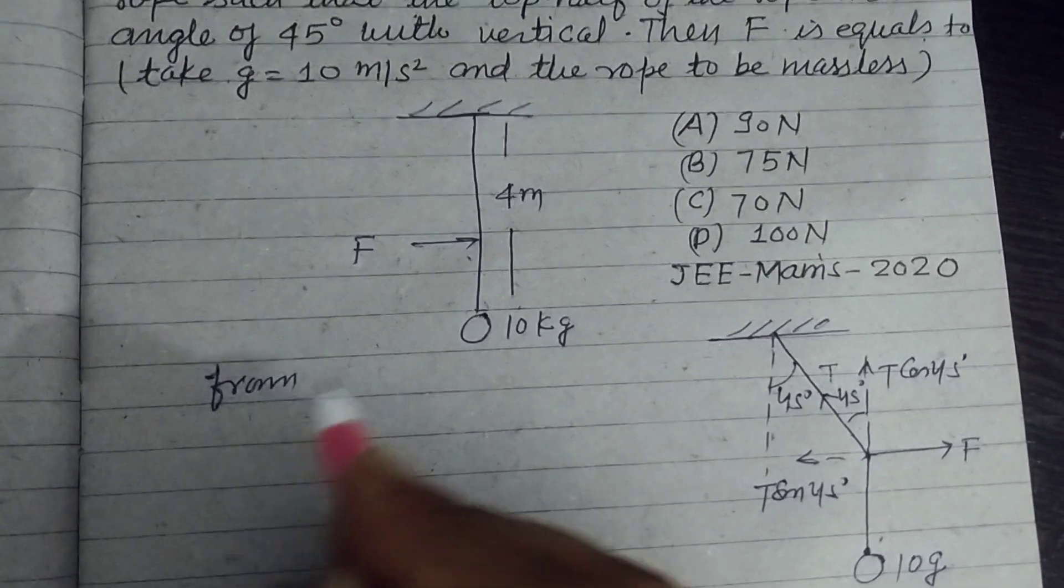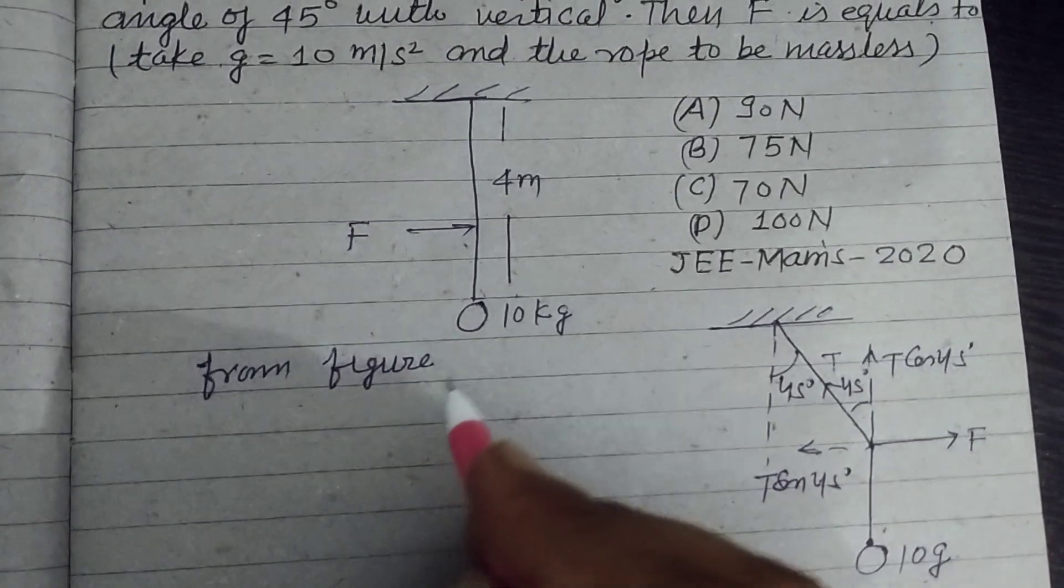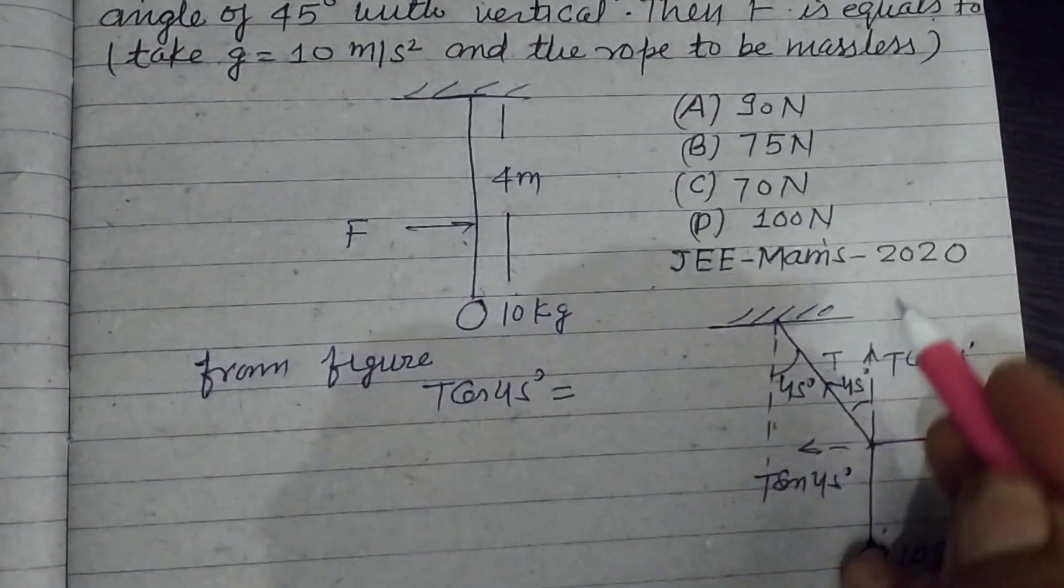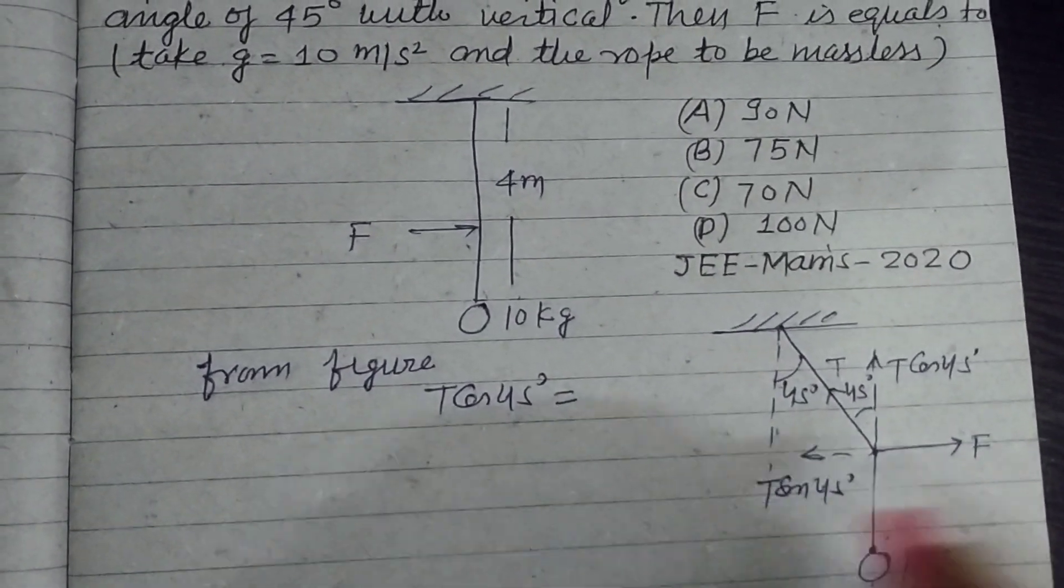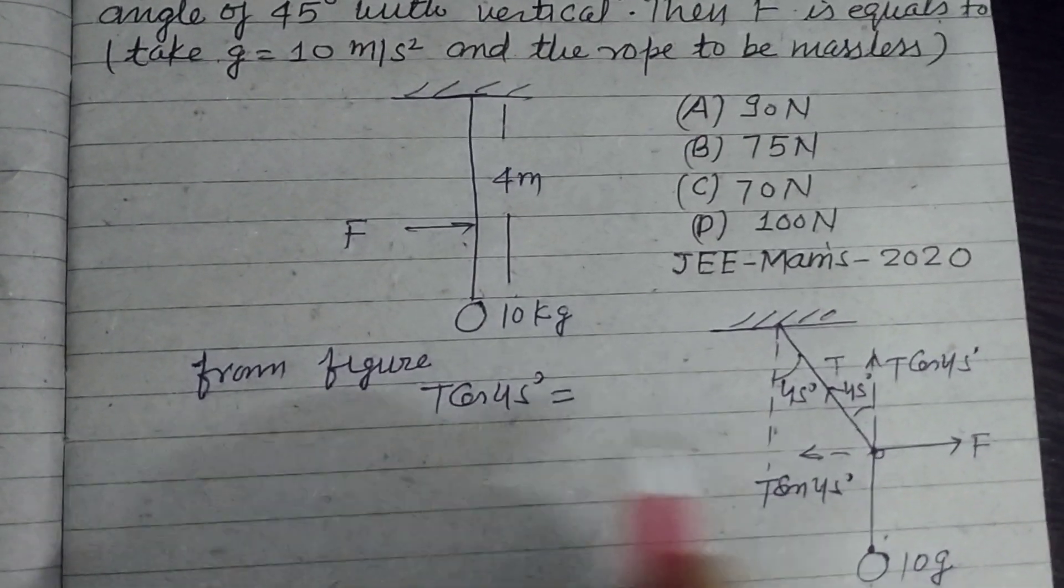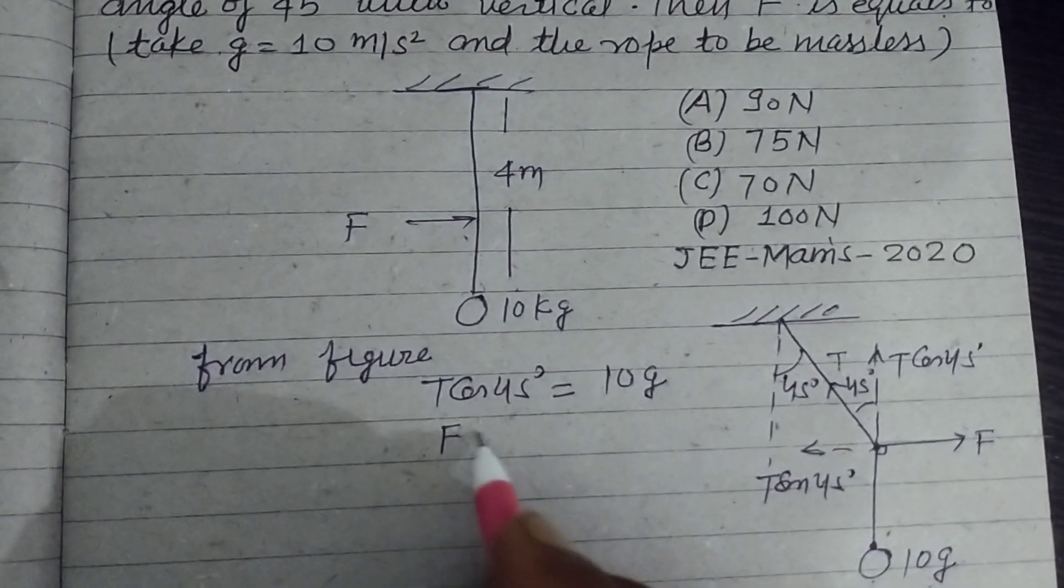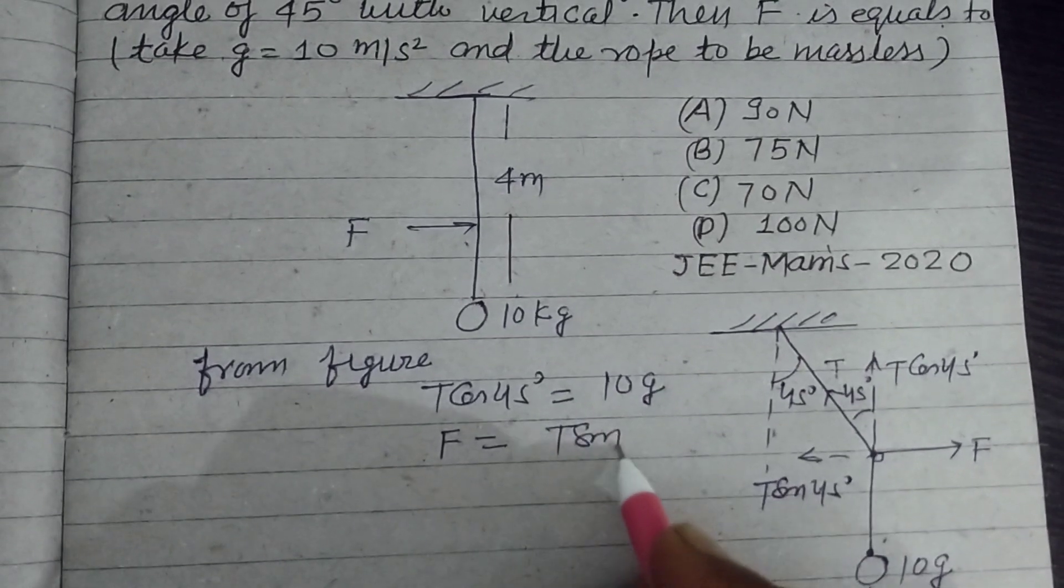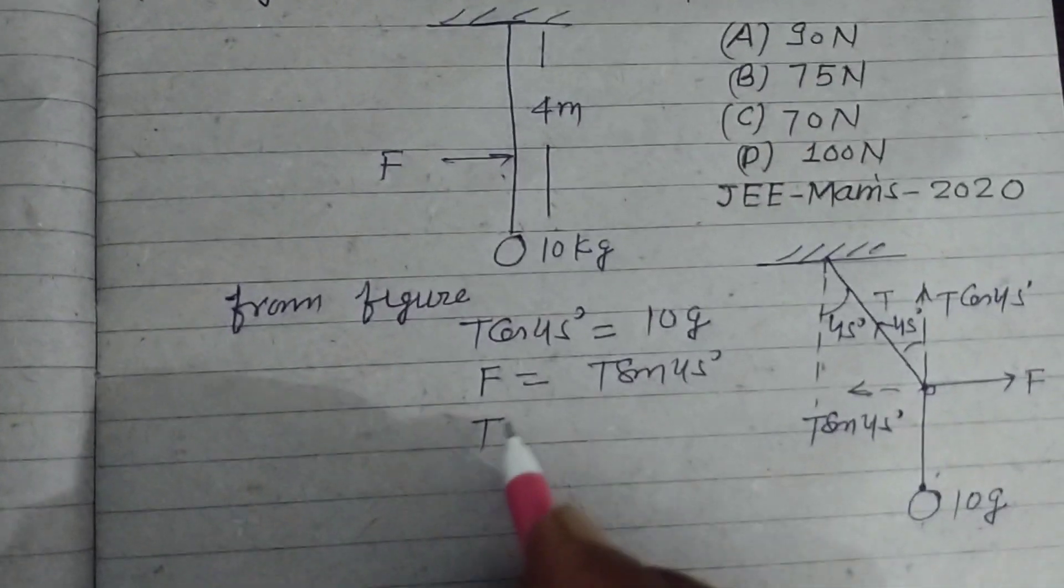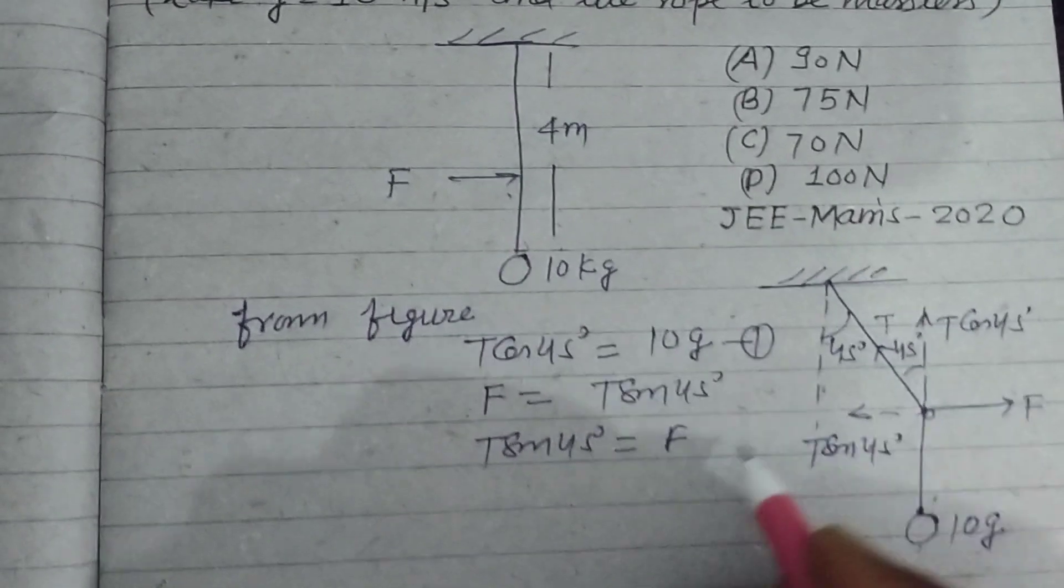So from the figure we have T cos 45° equal to... The vertical forces are equal and the horizontal forces are also equal for equilibrium. T cos 45° equals 10G and F equals T sin 45°. So we write it as T sin 45° equals F. So this is our first, this is our second equation.